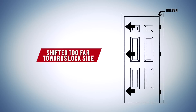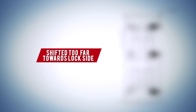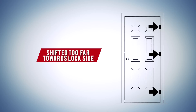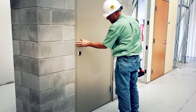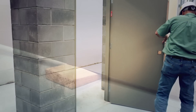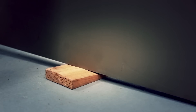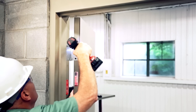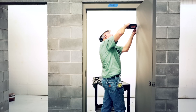When the entire door has shifted too far towards the lock side of the opening, this issue can be corrected by recessing the hinge leaf further into the door or frame, causing the door to shift closer to the hinge side. Open the door and place a support or wooden wedge under the door to relieve tension, then remove the hinge screws from the door.